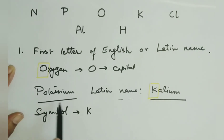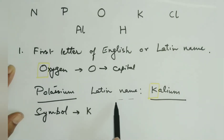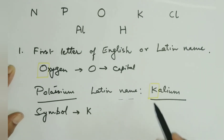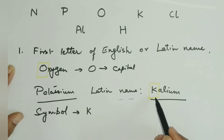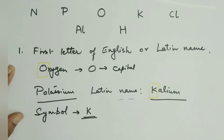Similarly, talking about another element — potassium. Potassium is an English name of an element. Its Latin name is Kalium and the first letter of Kalium is K. So the first letter of this Latin name was taken as the symbol for potassium.